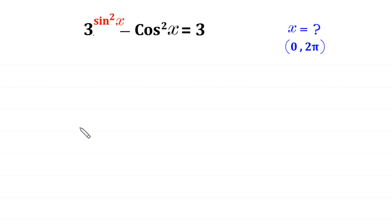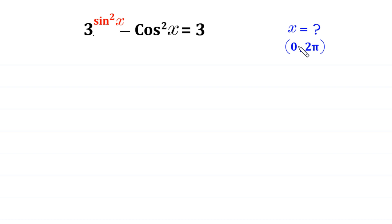Welcome! In this video we solve the trigonometric equation 3 to the power (sin²x − cos²x) = 3. We need to find all possible values of x within the range of 0 to 2π radians, or 0 to 360 degrees.